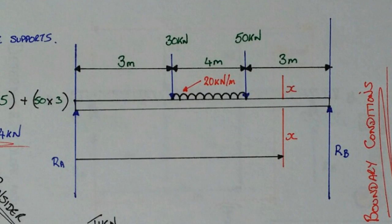We need to modify our method in some way to accommodate this type of loading. In effect, what we do is we allow our UDL to continue to the extremity of the beam and we counter this additional loading by introducing an equal and opposite loading into the bending moment expression.